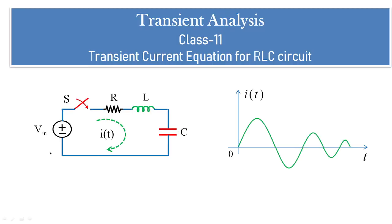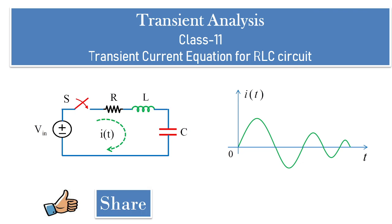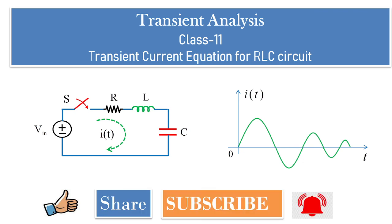In today's class we have seen the behavior of transient current under three responses: over-damped, critically damped, and under-damped conditions. The applications of this analysis will be seen in control systems as well as power electronics, which you will study in the future. I hope you liked this class — please share it among your friends, subscribe to my channel, and press the bell icon for future notifications. Thank you.